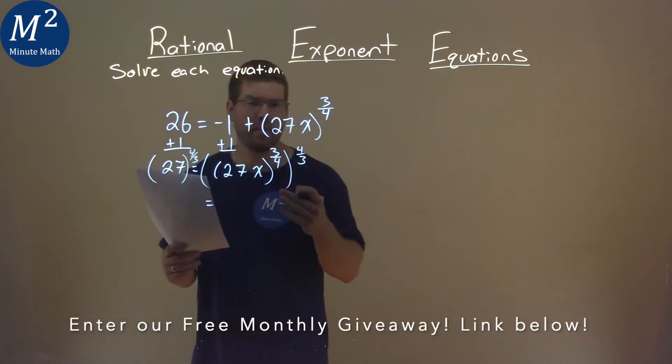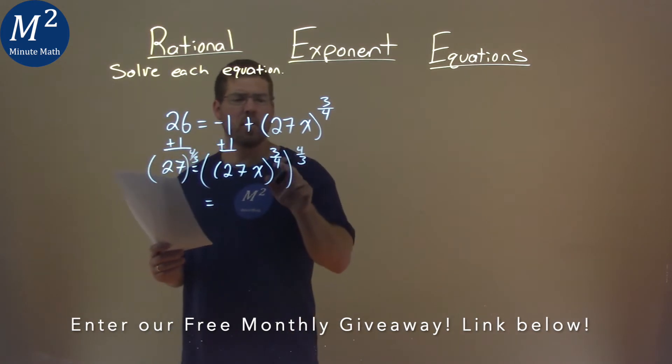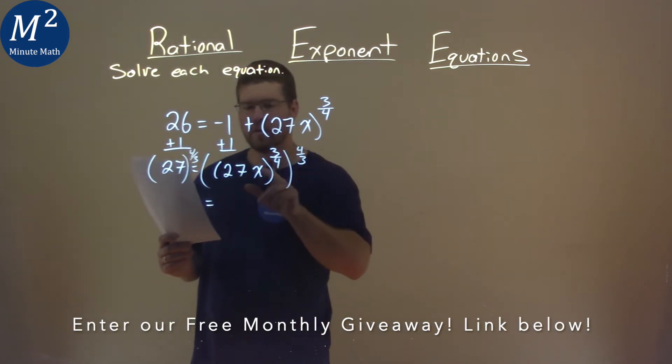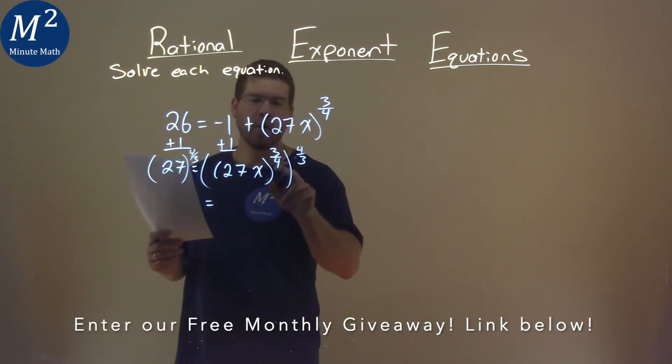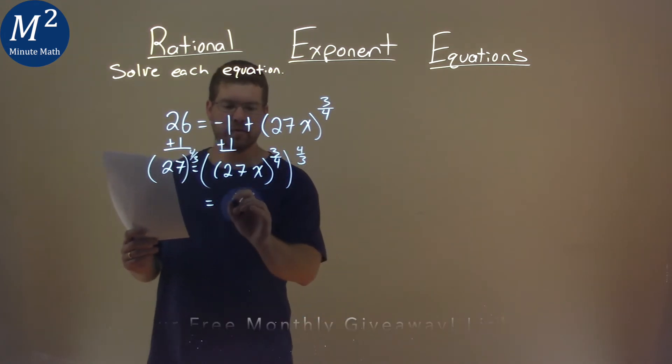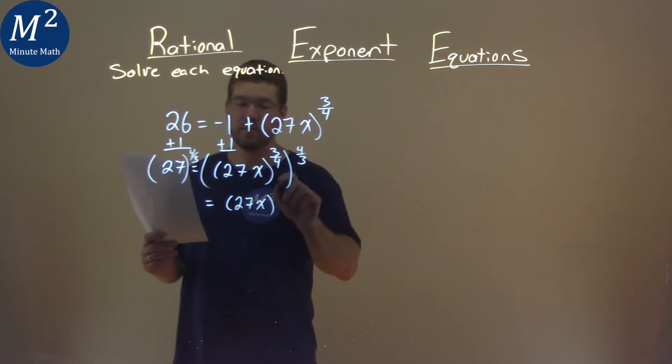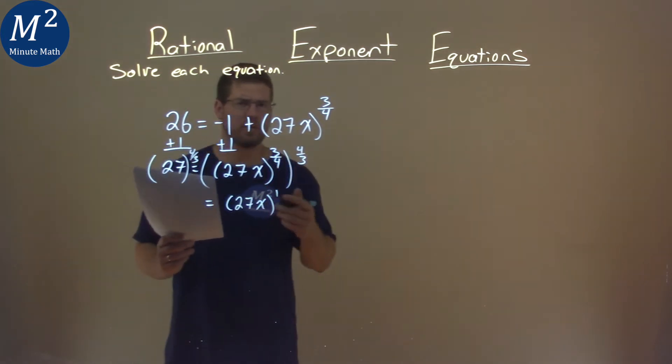So what does that do? Well, the right-hand side is really where the magic happens. 3 fourths to the 4 thirds power, or the exponent to another exponent. Our rules say we multiply the exponents. So 27x stays here, and 3 fourths times 4 thirds is 1, and that's why we chose 4 thirds.